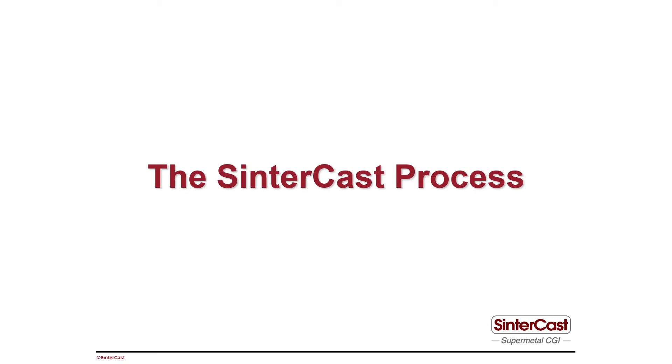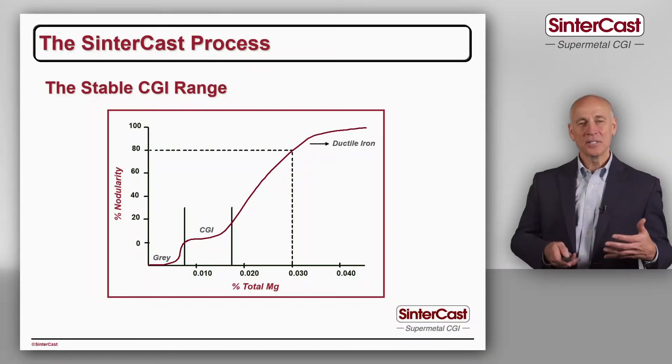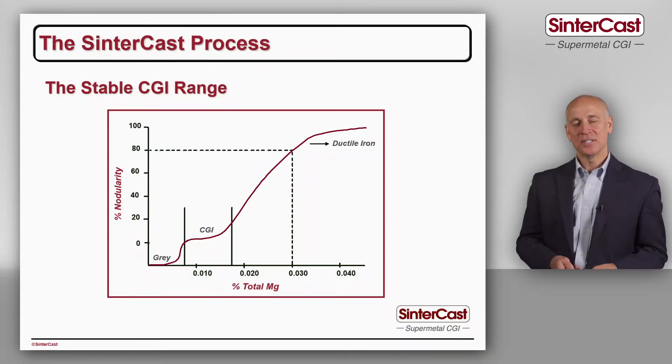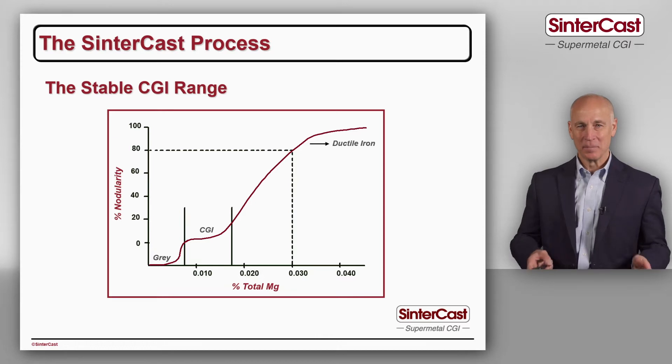In this video, we're going to discuss the Sintercast process for the production of compacted graphite iron. The stable range for CGI is usually discussed in terms of the S-curve that we saw in the last video, and this suggests that CGI is stable over some range of magnesium.